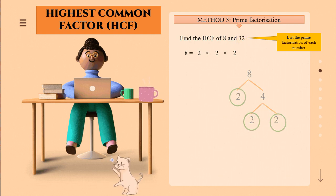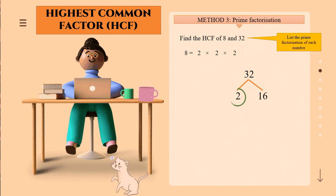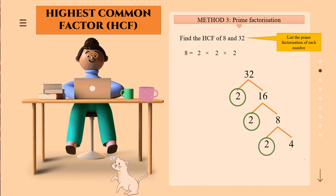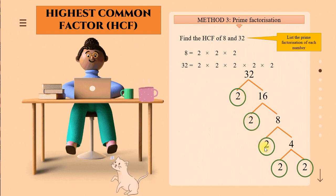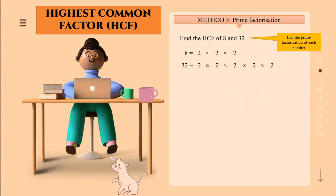For 32: 32 is 2 times 16, 16 is 2 times 8, 8 is 2 times 4, and 4 is 2 times 2. So 32 equals 2 times 2 times 2 times 2 times 2 — that is five 2s. This is how we list the prime factorization of each number.